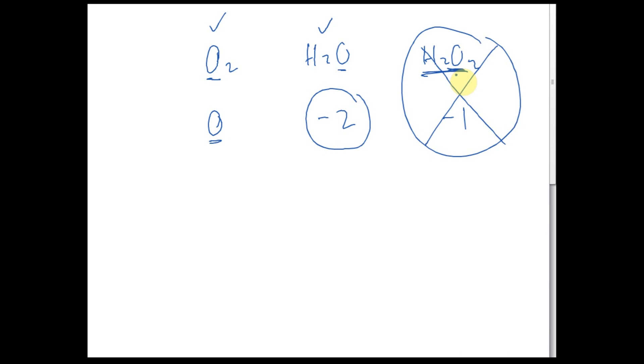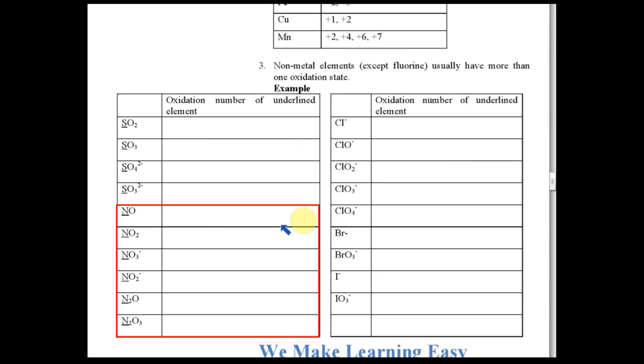But we can't say that the oxidation state of oxygen is just negative 2 — no. It can be negative 1, but it seldom comes out. And also, for O2, the oxidation state is 0.